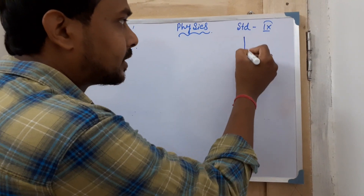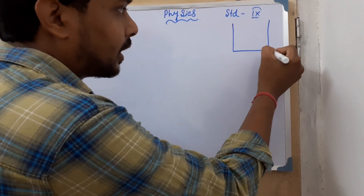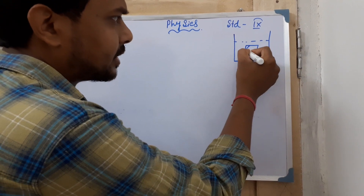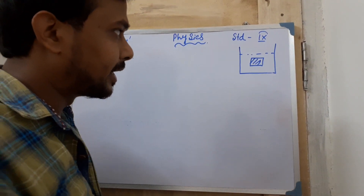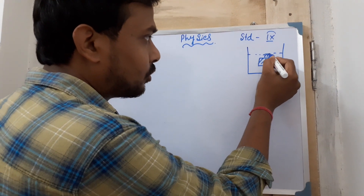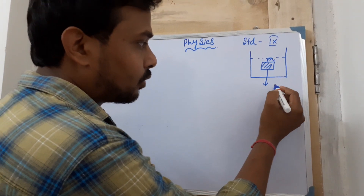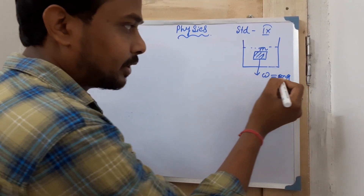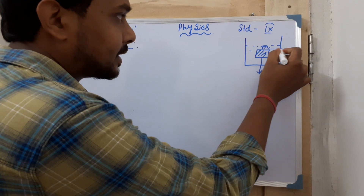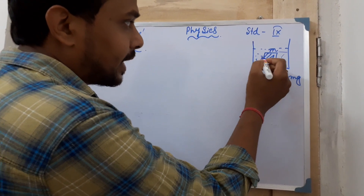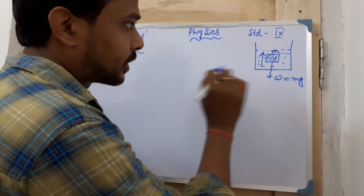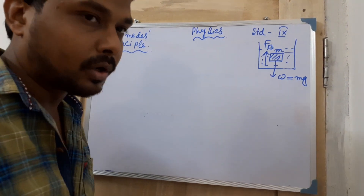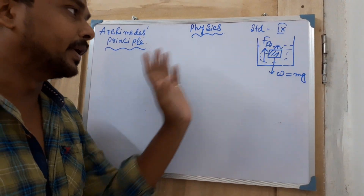Whenever a body is placed inside a liquid — whether fully immersed or partially immersed — if it has some amount of mass, its weight will act in a downward direction, which is always W = m×g. As liquid is also present, the liquid will give an upward directional force, which is known as upthrust, or buoyant force FB.